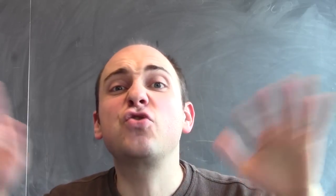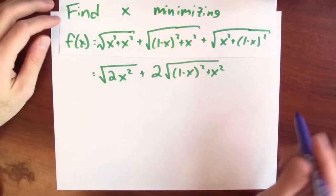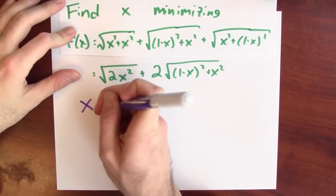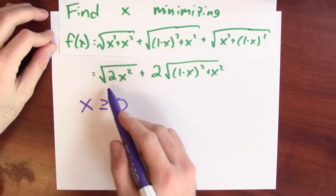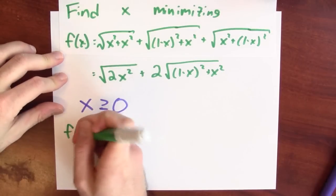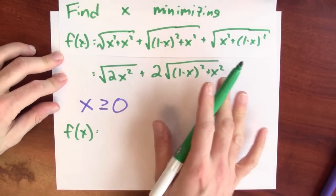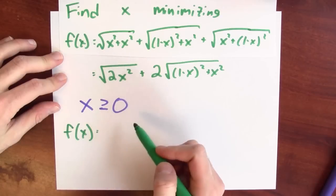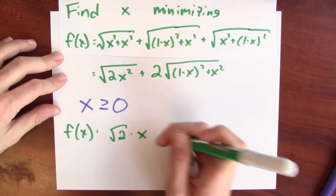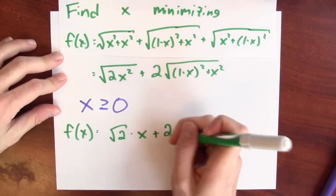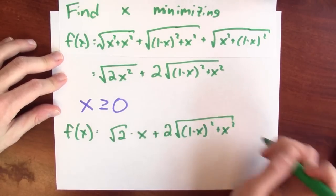We should also review if there are any constraints on this problem. I'll assume x is greater than or equal to 0. In that case, the square root of 2x² can be rewritten more simply: the square root of x² is the absolute value of x, and since x is non-negative, we get the square root of 2 times x plus 2 times the square root of (1−x)² + x².